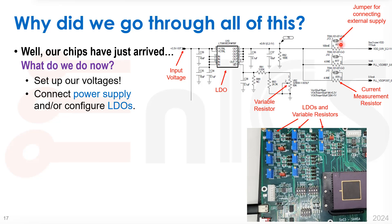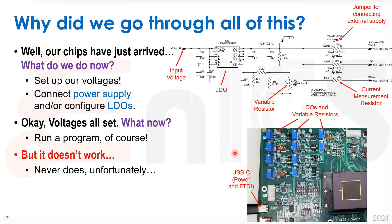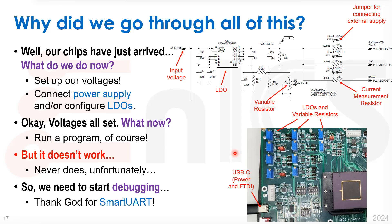There is a very small resistor in series with the voltage connection to the chip. A jumper lets us bypass it and short the voltage directly. We can also pull out the jumper and connect an external supply, bypassing the LDOs. By connecting a voltmeter across this small resistor and knowing its resistance, we can measure the current going into the chip — very useful for power measurements. The USB-C connection provides the FTDI chip, and that's all we need to communicate with and power our chip. Now we run a program, but it unfortunately never works the first time, so we need to start debugging — and thank God we have our Smart UART.